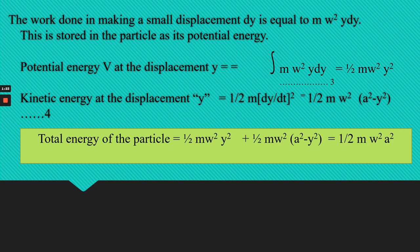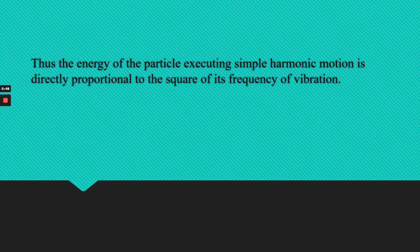Work done in making a small displacement dy is equal to m·omega²·y·dy. This is stored in the particle as potential energy. Potential energy equals the integral of m·omega²·y·dy, which equals half·m·omega²·y². The kinetic energy due to displacement y equals half·m·(dy/dt)², which equals half·m·omega²·(a² minus y²). Then the total energy of the particle will be half·m·omega²·a². Thus the energy of a particle executing simple harmonic motion is directly proportional to the square of the frequency of vibration.